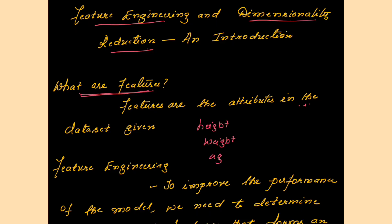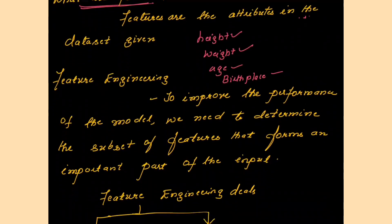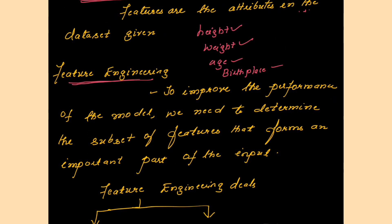For example, height, weight, age, and birthplace — there must be a data set from hospitals wherein height, weight, age, and birthplace information is included for a patient. These attributes we call features. Now you should know about the term feature engineering: we need to improve the performance of the machine learning model.